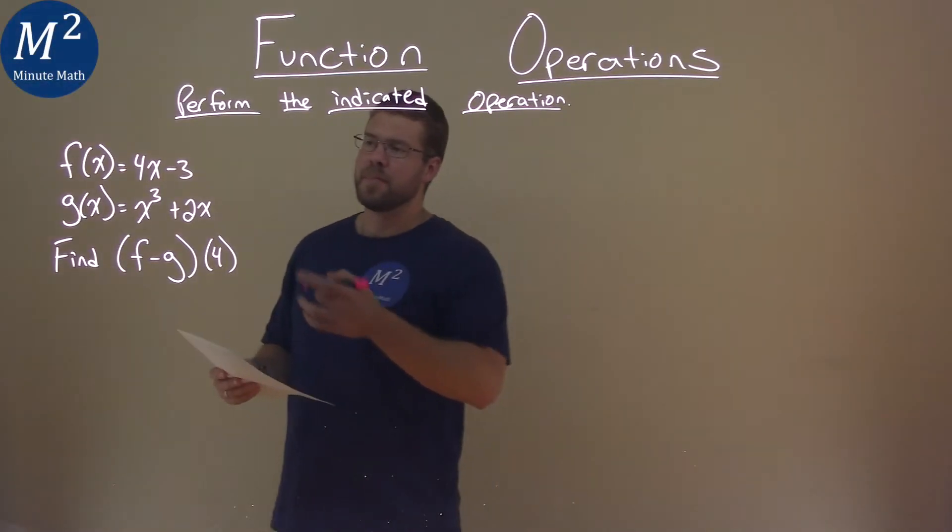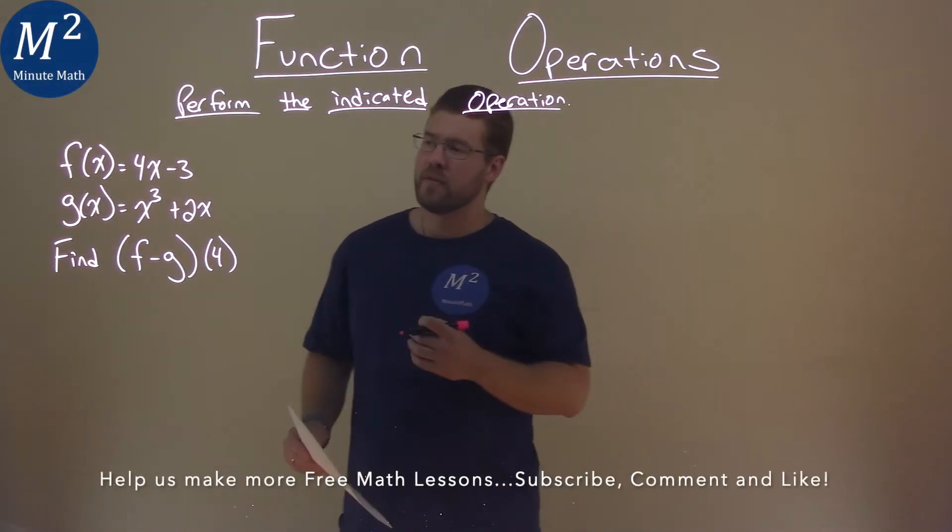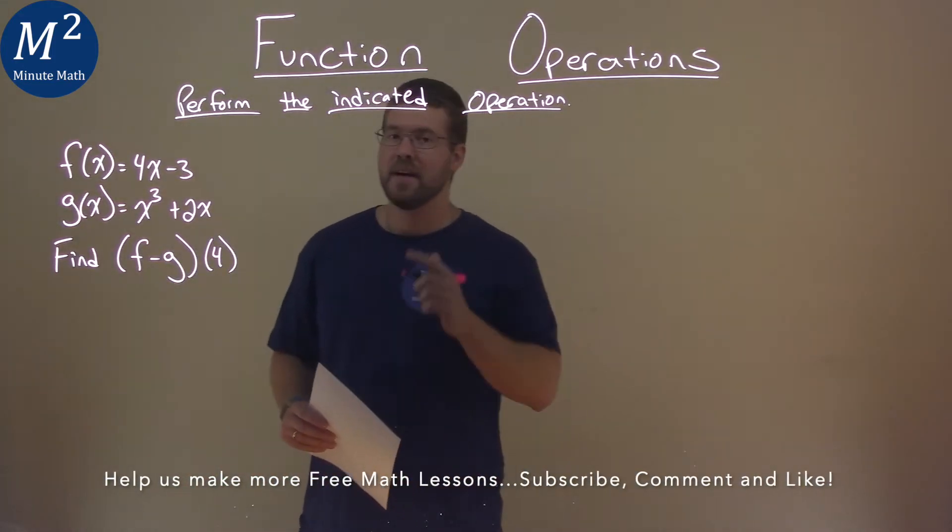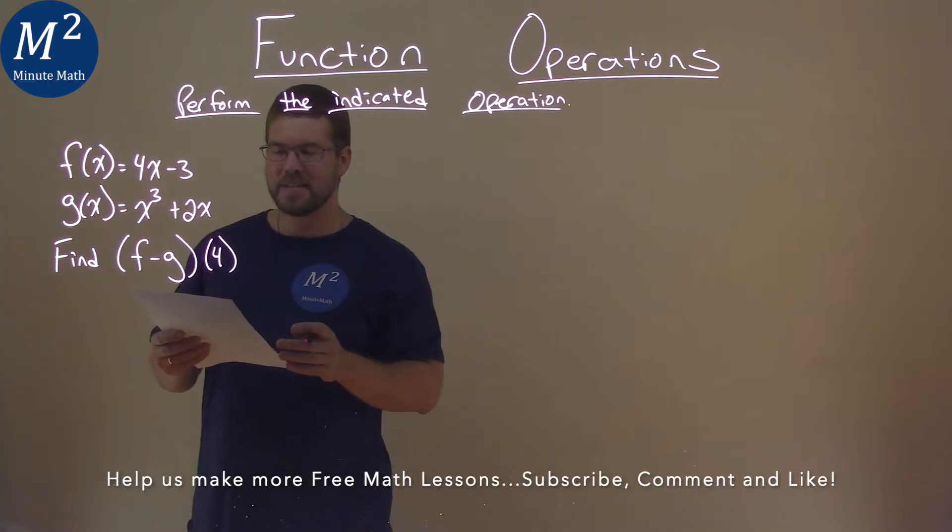We're given this problem right here. f(x) equals 4x minus 3, and g(x) equals x cubed plus 2x, and we need to find (f - g)(4).